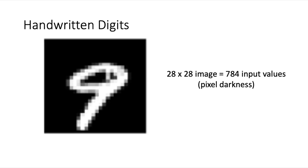Each image of a digit is a 28 by 28 pixel black and white image with grayscale values representing the pixel darkness. Because it's a 28 by 28 pixel image, this means our input has 28 times 28, which is 784 values, so it is a 784 dimensional input.